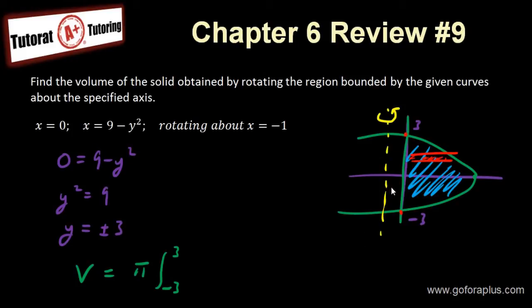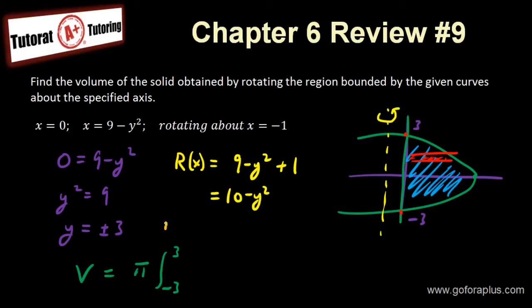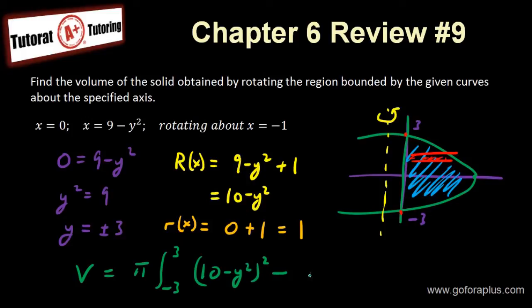Since my rectangle is on the right side of the axis, I take my function minus the axis. So big R is 9 minus y squared subtract minus 1, which gives 9 minus y squared plus 1, so big R equals 10 minus y squared. Small r is the line x equals 0 subtract minus 1, which is 0 minus (minus 1) equals 1. So small r equals 1.